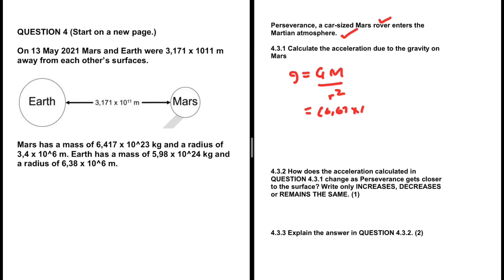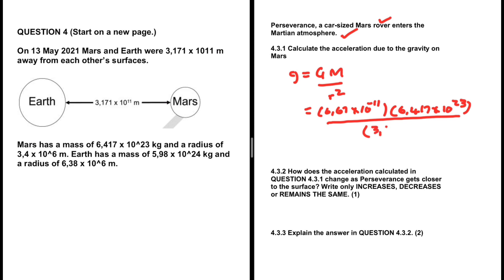Substituting the values: G is 6.67 times 10 to the minus 11, multiplied by the mass of Mars which is 6.417 times 10 to the power 23, everything divided by the radius of Mars, 3.4 times 10 to the power 6, and that radius is squared.